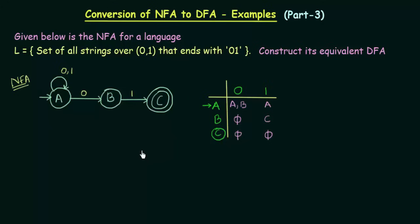Hello everyone. In this lecture we will be converting another NFA to a DFA. Given below is the NFA for a language L, which is a set of all strings over 0,1 that ends with 0,1. We have to construct its equivalent DFA.